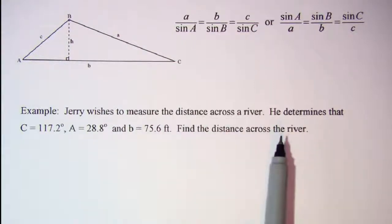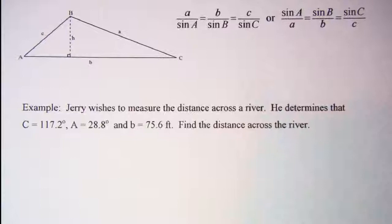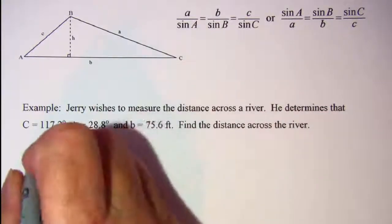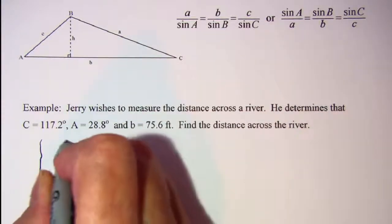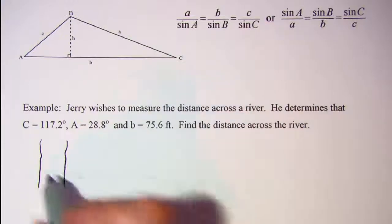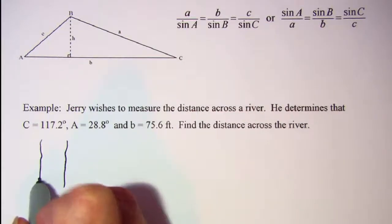Find the distance across the river. Now let me get the picture drawn here. We have our river and B is here.